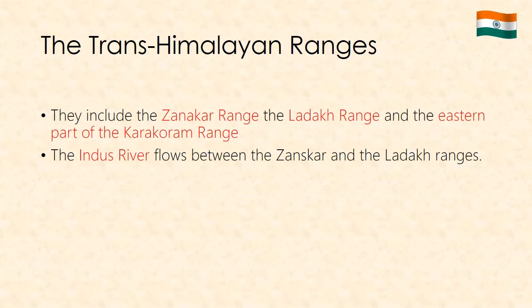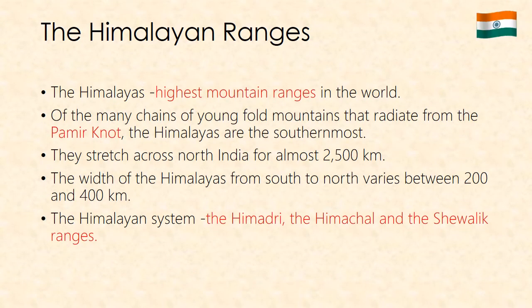The Trans-Himalayan Ranges lie north of the Himalayas and run parallel to them. The Trans-Himalayan Ranges are the highest mountain ranges in the world. Of the many chains of young fold mountains that radiate from the Pamir Knot, the Himalayas are the southernmost.